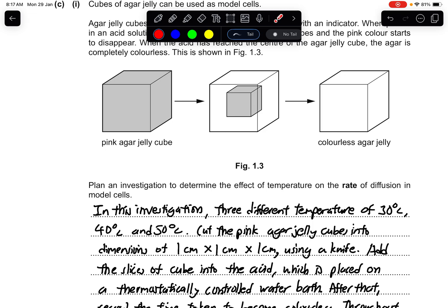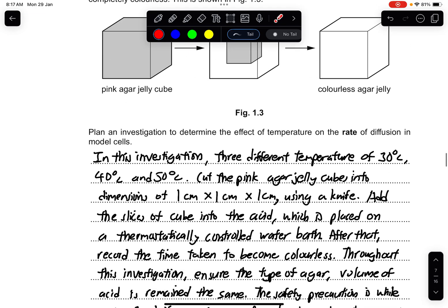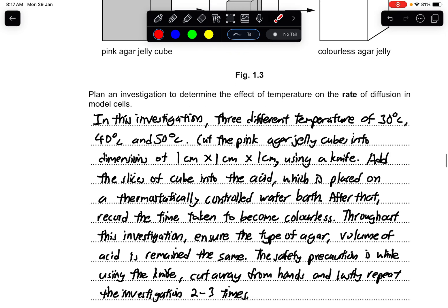Plan an investigation to determine the effect of temperature on the rate of diffusion in model cells. I will use the same method. In this investigation, three different temperatures of 30 degrees, 40 degrees, and 50 degrees are used for the acid. Cut the pink agar jelly cubes into dimensions of 1 centimeter by 1 centimeter using a knife. Add the slices of cubes into the acid which is placed on the thermostatically controlled water bath. After that, record the time taken to become colorless.